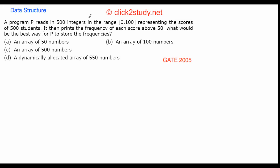The question is: a program P reads in 500 integers in the range 0 to 100. These represent the scores of 500 students. It then prints the frequency of each score above 50.